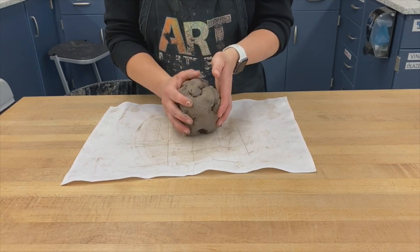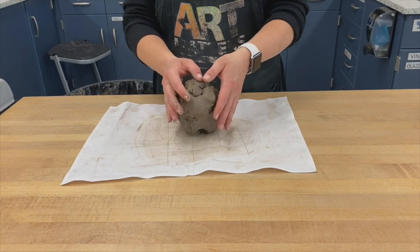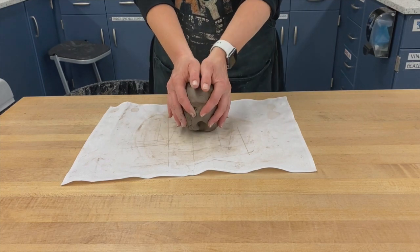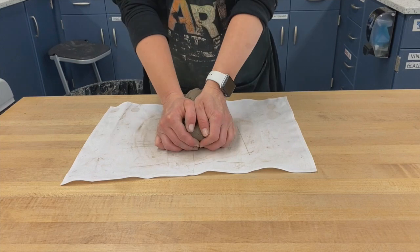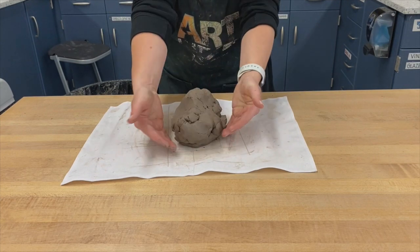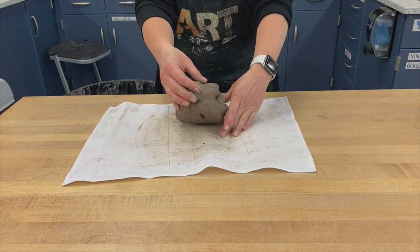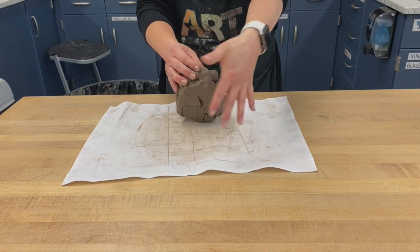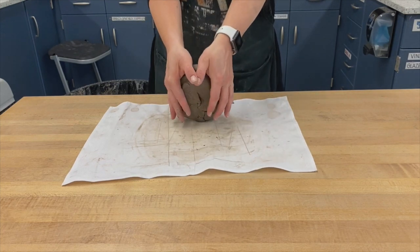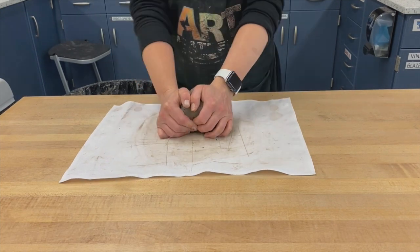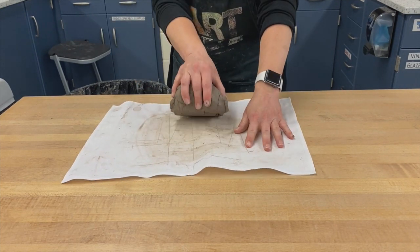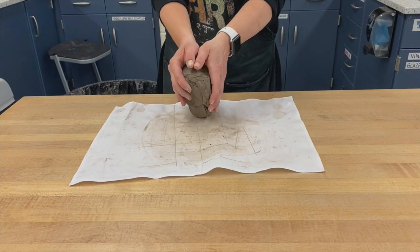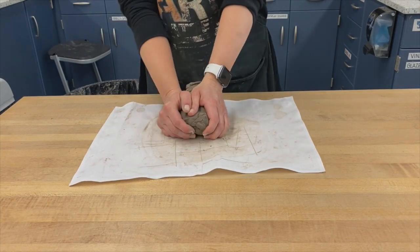For wedging, you're basically going to wrap your hands around the clay and push down and away from you. Then you're going to pull the clay up. It might stick to your mat a little bit, so you're going to want to push that back down. Grab it again, push down and away from you. As you repeat this process, it's a good idea to turn the clay occasionally.